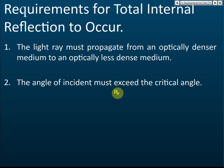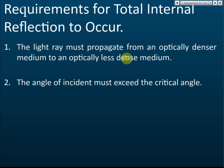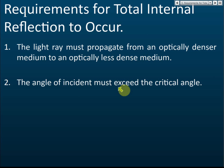So the first requirement is that the light ray must move from an optically denser medium to an optically less dense medium. The second requirement is that the angle of incidence must exceed the critical angle — it must be higher than the critical angle. These are the two requirements for total internal reflection. In an exam, you must give both of these.